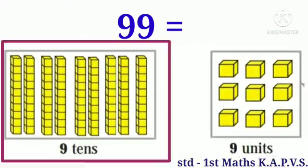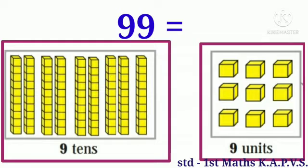99 is equal to 9 tens and 9 units. There are 9 bundles of tens and 9 single units. Each bundle of 10 contains 10 units.